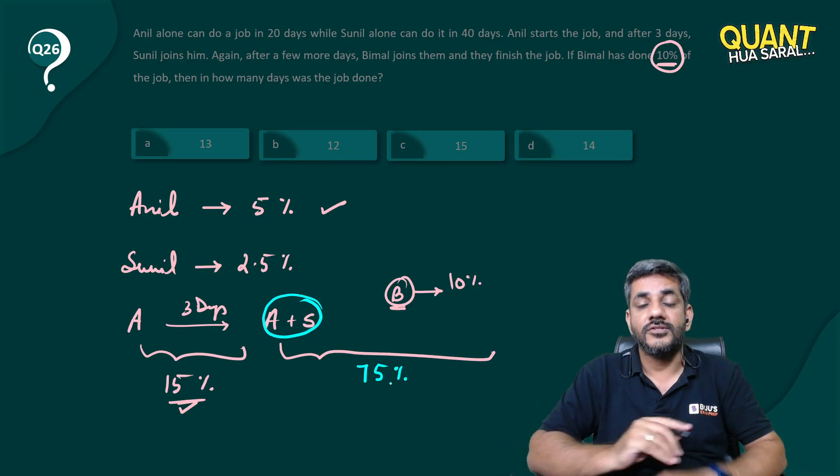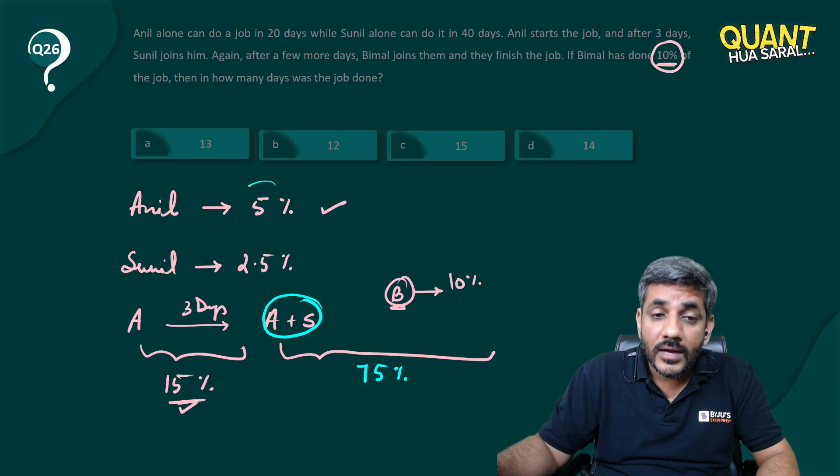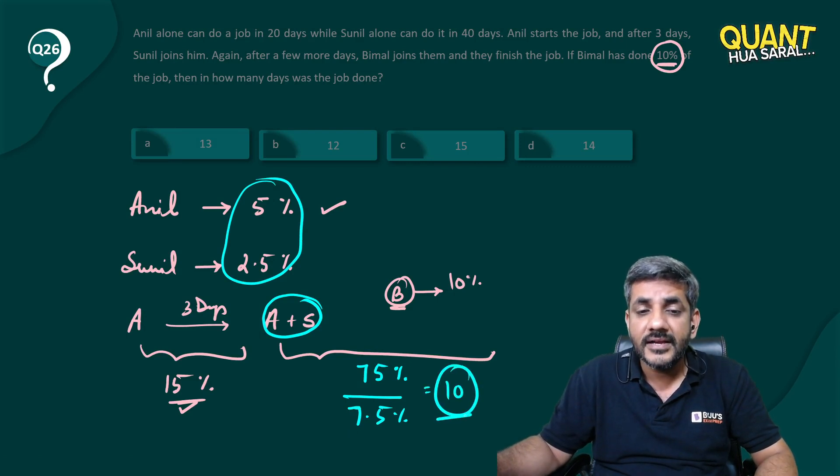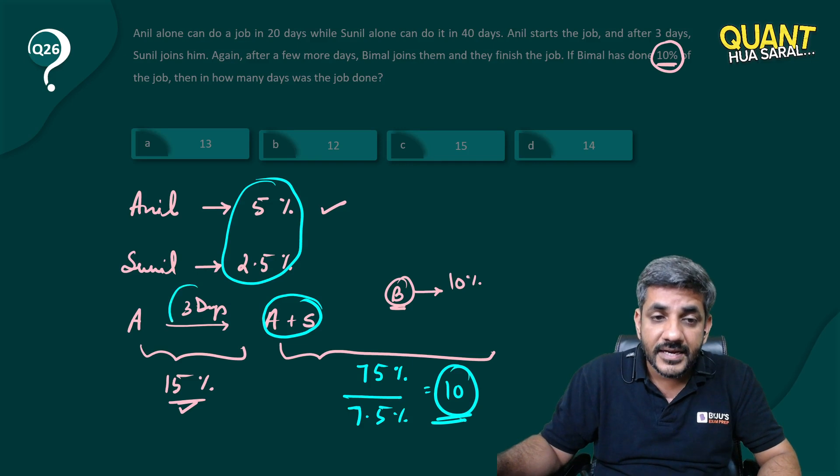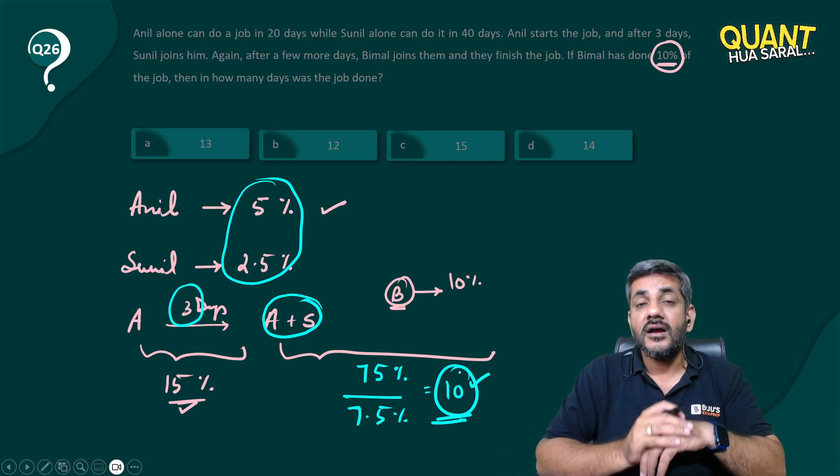They must have done 75% of the job and together they are doing 7.5% of the job. If they have done 75% and they do 7.5% in a day, that means they must have taken 10 days here. So first 3 days are taken by Anil alone, next 10 days are taken by Anil and Sunil together.